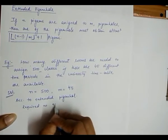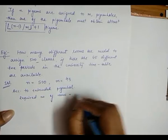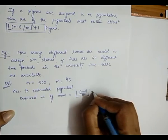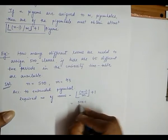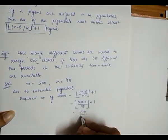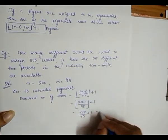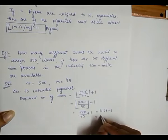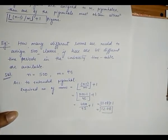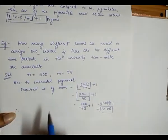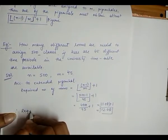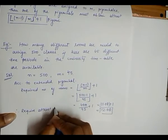According to the extended pigeonhole principle, the required number of rooms equals the floor value of (n minus 1) upon m, plus 1. Substituting the values: (500 minus 1) upon 45, plus 1, which gives 499 upon 45, plus 1. This comes out to be 11.08 plus 1, or 12.08. Taking the floor value and adding 1, we require at least 13 rooms.